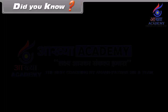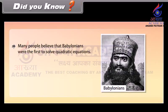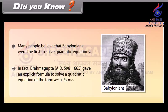Did you know? Many people believe that the Babylonians were the first to solve quadratic equations. In fact, Brahmagupta (AD 598 to 665) gave an explicit formula to solve a quadratic equation of the form ax squared plus bx equals zero.